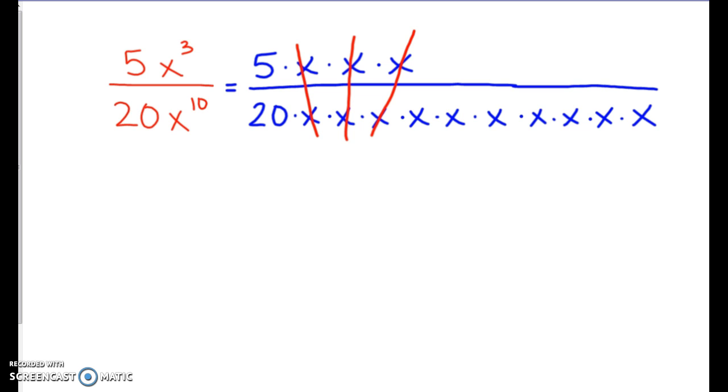Because anything divided by itself ends up being 1. So down here at the bottom, we end up with 7 x's left over. So we now have 5 over 20 times x to the seventh.